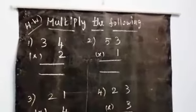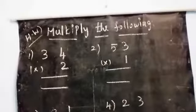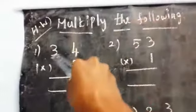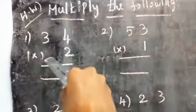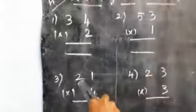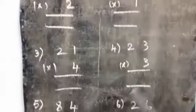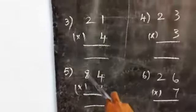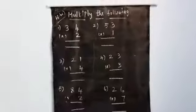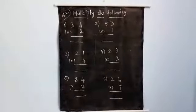Now children, do you know how to multiply two-digit numbers by one-digit numbers? Here is your homework — multiply the following: first sum, thirty-four into two; second sum, fifty-three into one; third sum, twenty-one into four; fourth sum, twenty-three into three; fifth sum, eighty-four into two; sixth sum, twenty-six into seven. Do it in your homework note. Thank you.